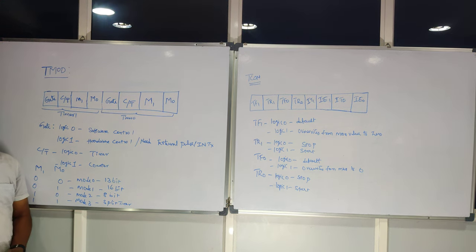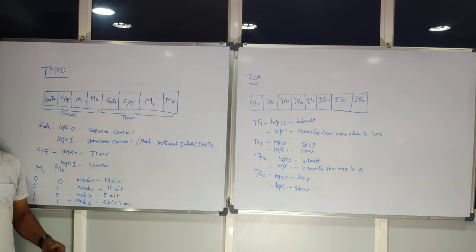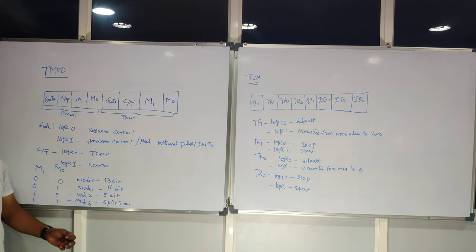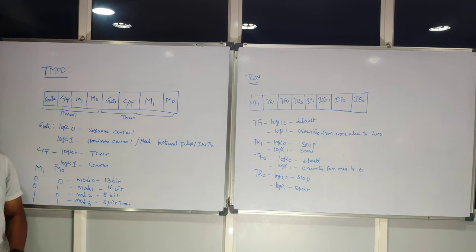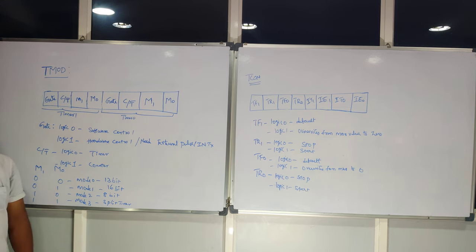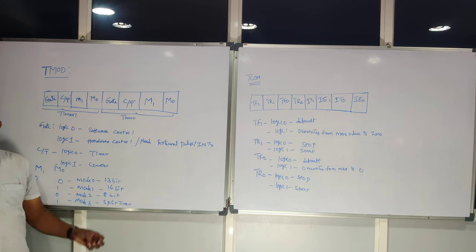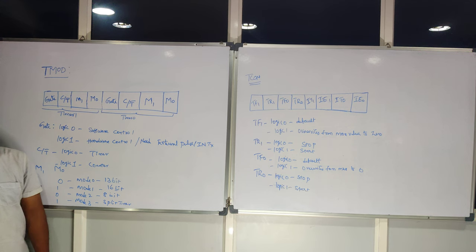Welcome to Aerotec Solutions. Let's continue with how to program 8051 timers. In the previous session we discussed how to calculate the number of pulses and what the pulse period is based on the timers counting process. Based on the capacity of timers, you are aware it can count 65,536 pulses for one rotation.